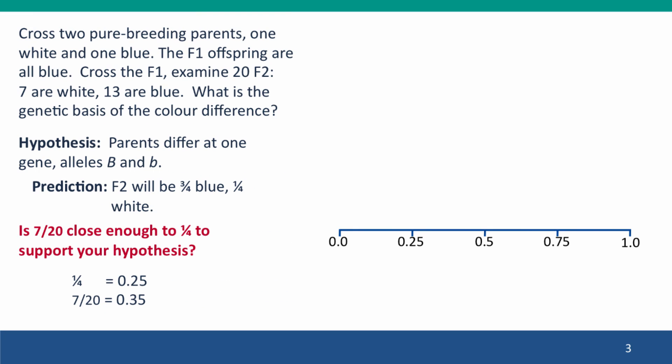So consider a cross between two pure-breeding parents, one white and one blue. The F1 offspring are all blue. We cross them and examine 20 F2 offspring, and we see that seven are white and 13 are blue. Question asked, what's the genetic basis?